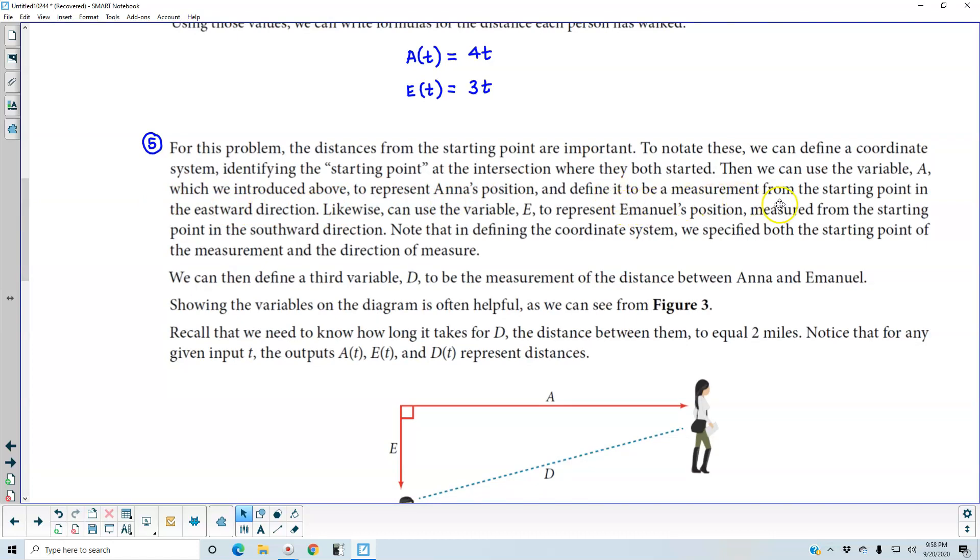And define it to be the measurement from the starting point in the eastward direction. So we can say that this segment represents A, because that will be the distance for Anna's position.